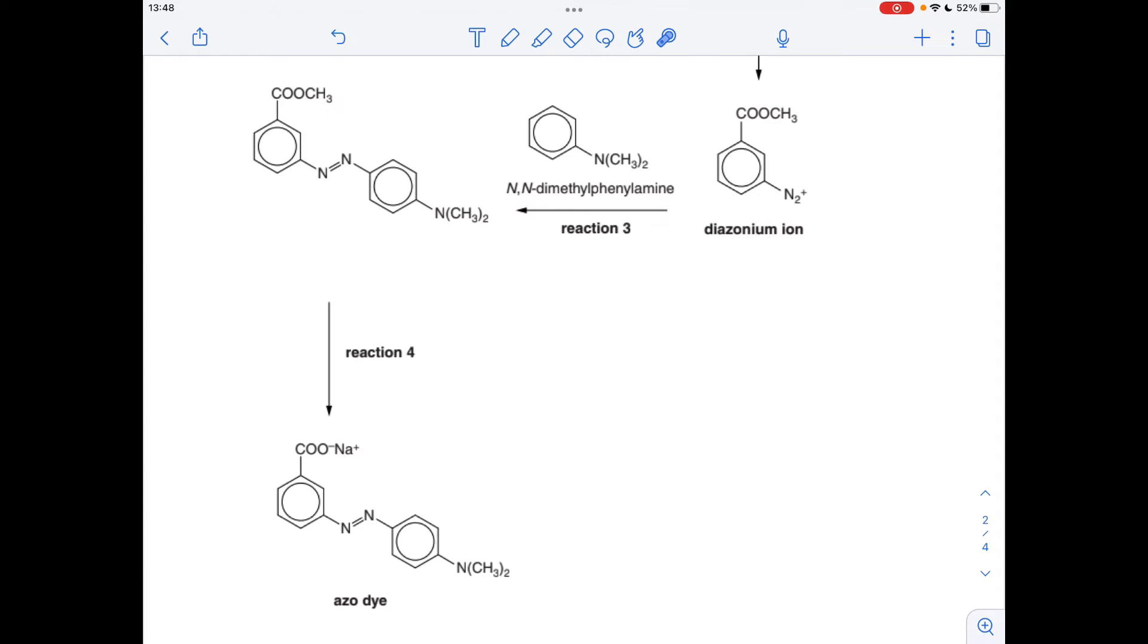So I've gone back to the flow chart to explain what's going on in reaction four because we've got to say what the reagent is. We've turned an ester into a carboxylate salt - it's a sodium salt. So we need to hydrolyze this ester bond and the way we do that is react it with hot aqueous sodium hydroxide.